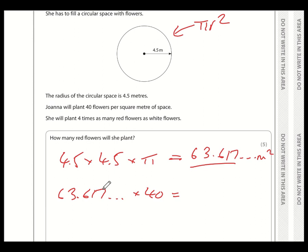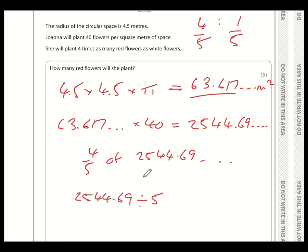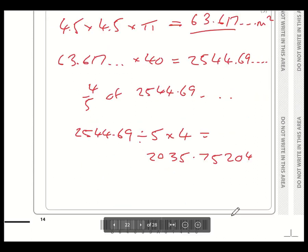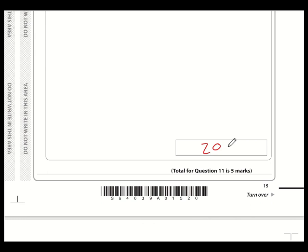Okay. And we know that she's going to plant 40 flowers per square meter. So we need to multiply this answer. So 63.617 times by 40. Since this is sitting on my calculator, I don't need to worry about rounding. I can just type times 40. And I'm getting 2544.69. Again, a fairly nasty number. And she's planting four times as many red as white. So red to white. The ratio is of four to one. So therefore, four fifths are red and one fifth is white. So all we need to do now is calculate four fifths of this number here, 2544.69, which is still sitting on my calculator. So when we're working at a fraction of an amount, we take our total. We divide by the number on the bottom and we multiply by the number on the top. And what do we get? We get 2035.75204. So since you can only plant a whole number of flowers, I would say, well, that's approximately 2036. Although I think they'll accept 2035 as well. And that is the answer to that question 2036.